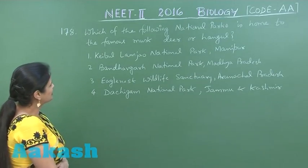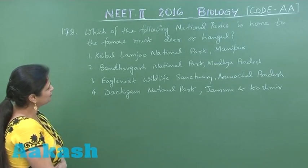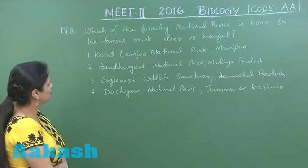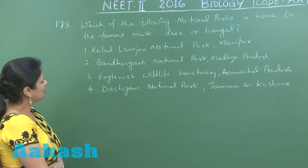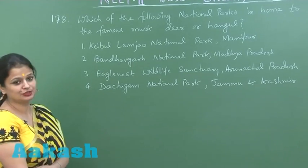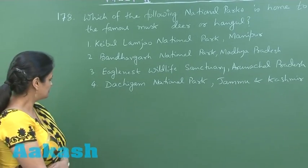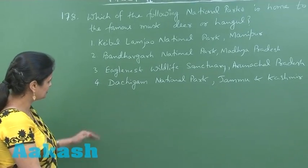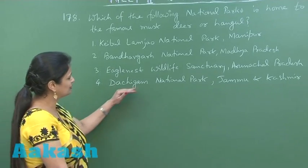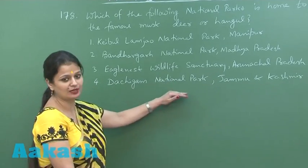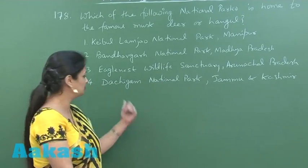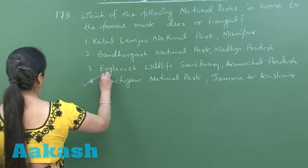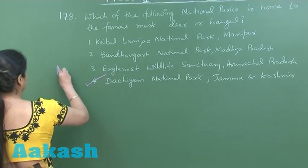Question number 178: which of the following national parks is home to the famous musk deer? The right option for this question is Dachigam National Park, so option number four is the correct answer.